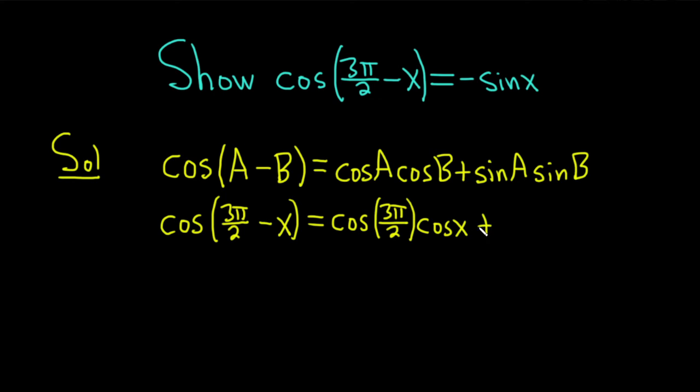And then we have plus. Then a is 3π/2. So this is the sine of 3π/2 times the sine of x.